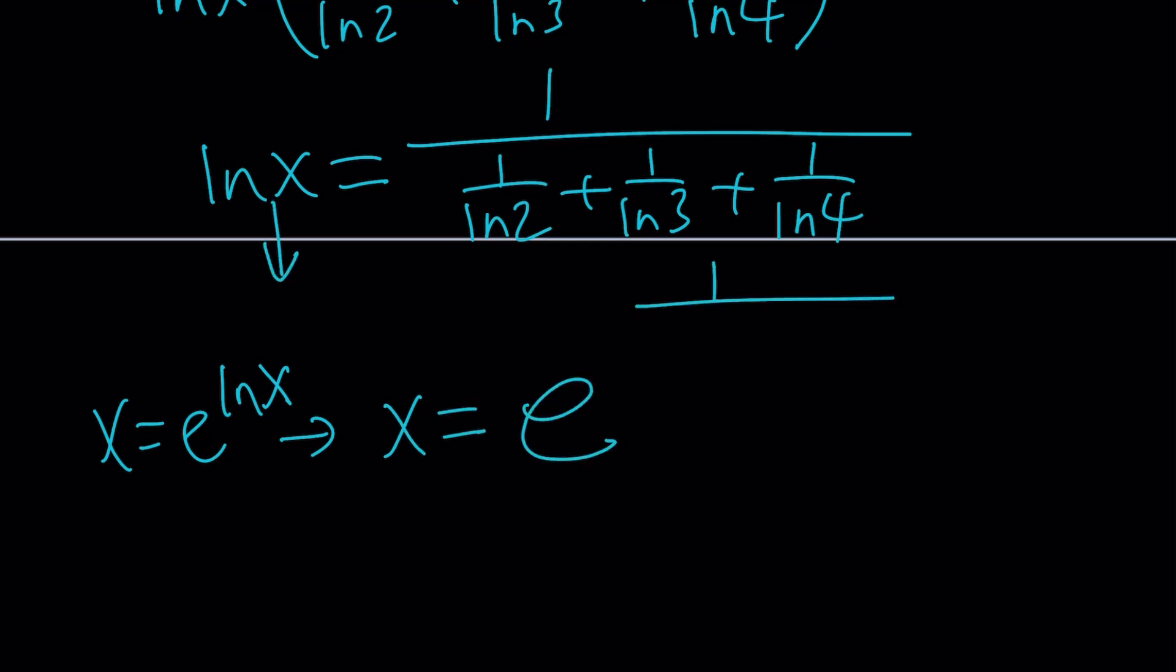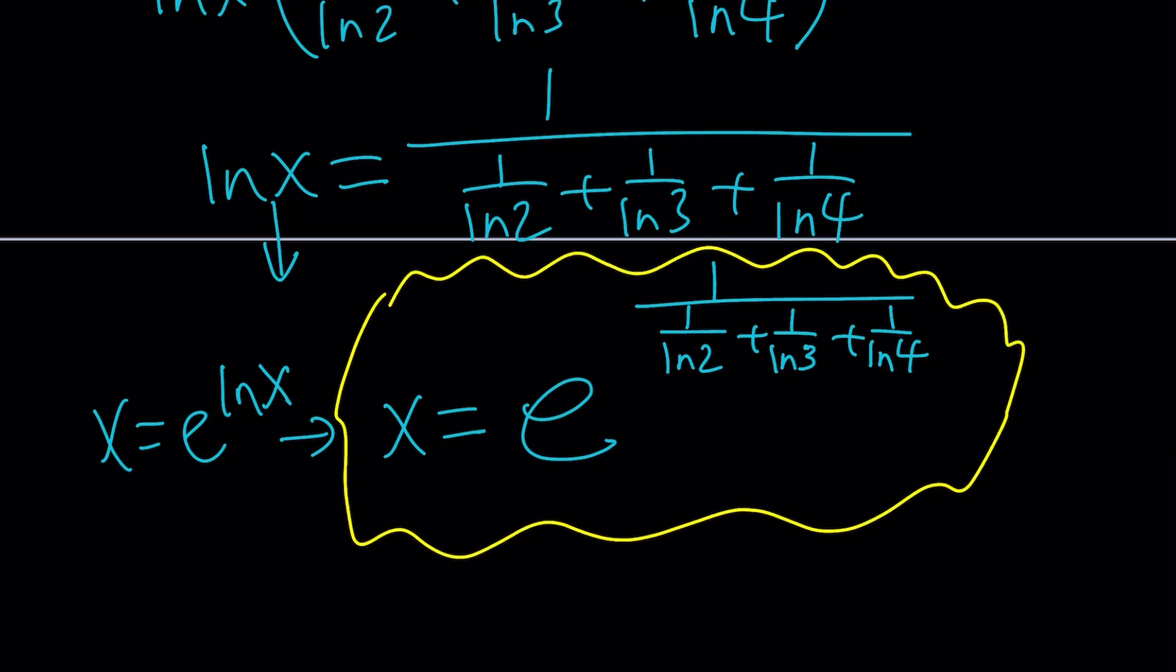Oops. 1 over 1 over ln 2. That should be the reciprocal of the sum of reciprocals. And obviously, if you go out and look this up, you're going to get a numerical value for x. And this also shows us that there is a single solution for this equation.